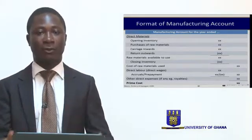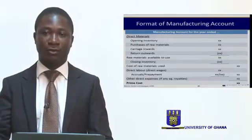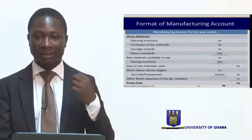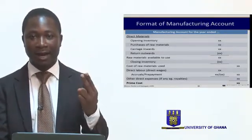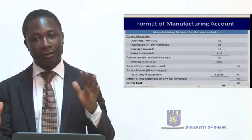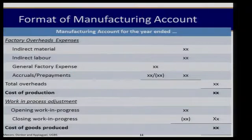Once we have our prime cost, we then determine our indirect costs or factory overheads, which would involve our indirect material, indirect labor, and indirect expense. The addition of our indirect costs or factory overheads to our prime cost will give us the cost of production before we make an adjustment for work in progress — you could call it the gross cost of production.